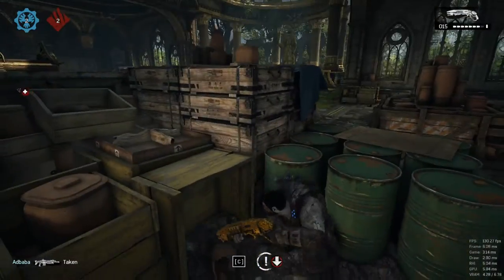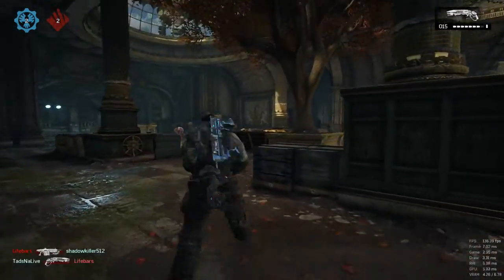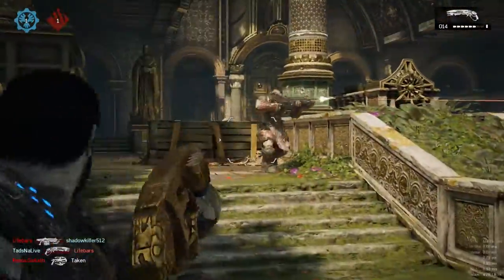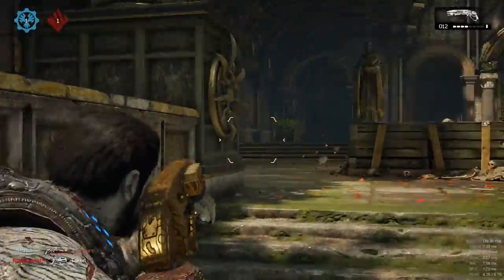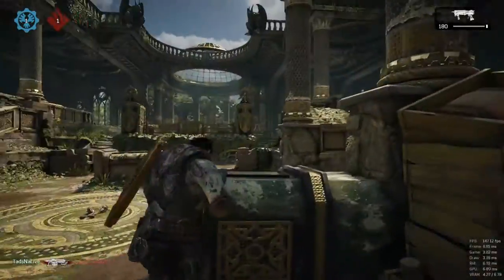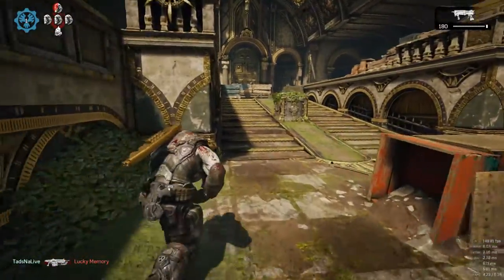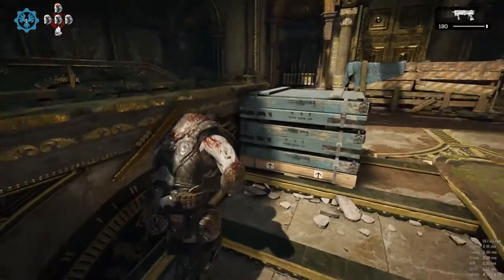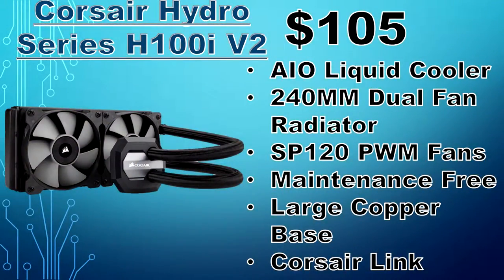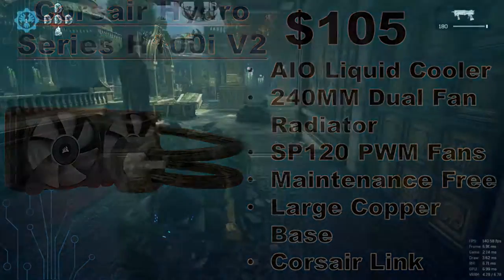Since this build includes a K-SKU processor, many users will be taking advantage of its unlocked multiplier. Also, since the 6800K doesn't come with a stock cooler, an aftermarket cooler solution is needed. Taking into consideration this processor's TDP, you will need a beefy cooler to keep its temps within an acceptable range. That is where the Corsair H100i comes into play. This is a closed-loop 240mm dual-fan radiator with a large copper base for its CPU block that will cover more surface area for superior cooling performance.